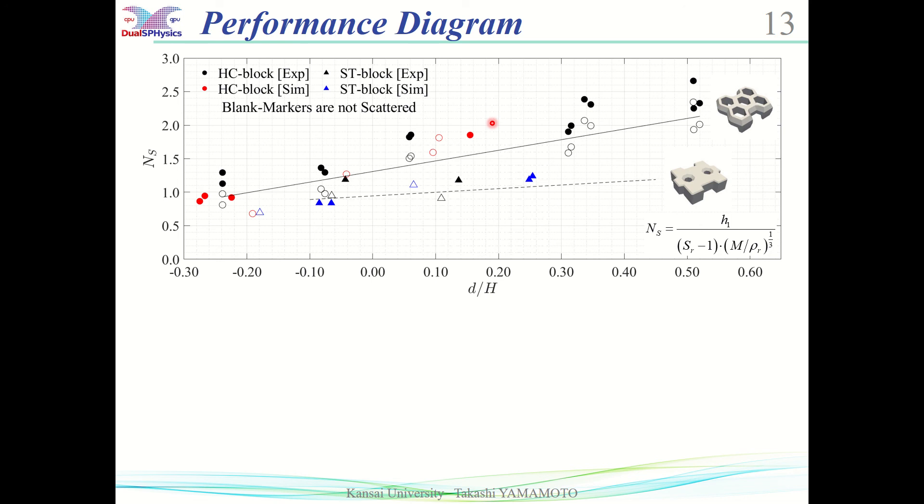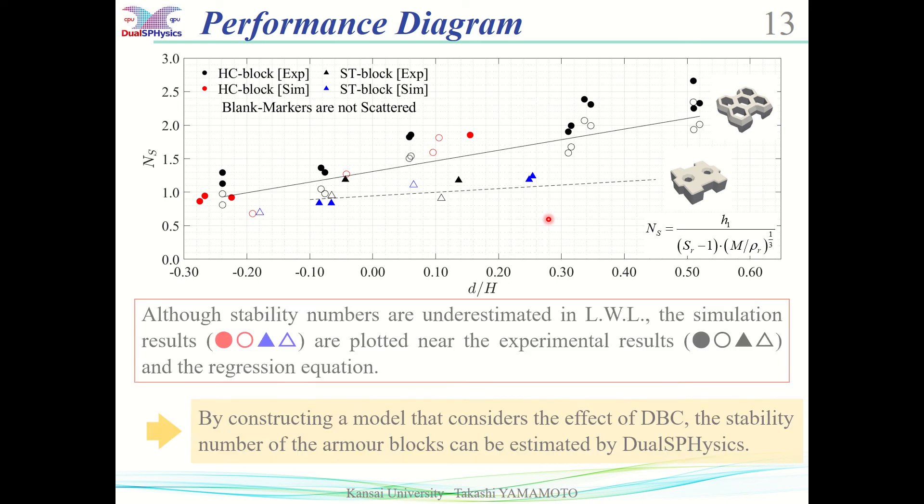Filled plots show the damage cases, and blank plots show the no damage cases. The solid and dashed lines show the performance regression equations for HC block and ST block respectively. Although the stability number is slightly underestimated under the condition of low water level in the harbor, the stability number is generally in good agreement with experimental and simulation values.